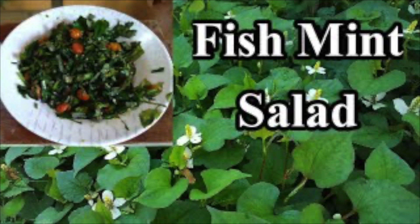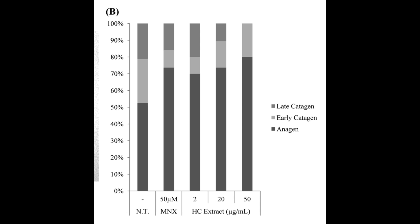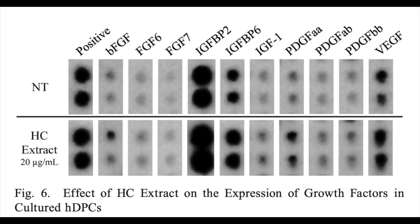Houttuynia cordata supposedly has a bit of a fishy taste, but it doesn't actually contain fish or any other animal products, so it is vegan. It is an herb that has been used in traditional Chinese medicine. Dr. Kim and his fellow researchers decided to see what effects it had on hair growth and on the biochemistry of hair follicles. The short summary was that this herb stimulated the growth of cultured human hair follicles and also stimulated the expression of numerous growth factors. The results were so interesting that the researchers decided to identify the active ingredient of Houttuynia cordata, which turned out to be quercitrin — a close cousin of quercetin.